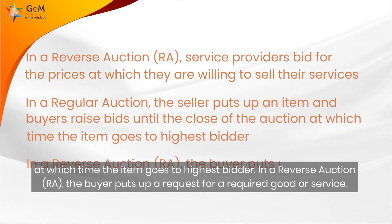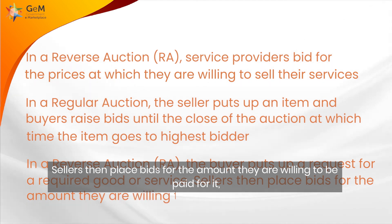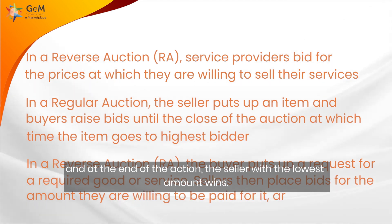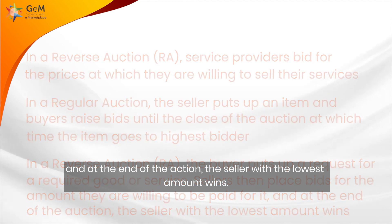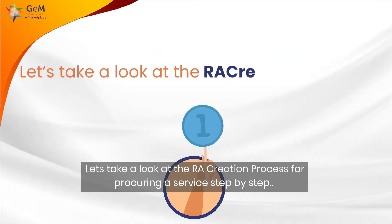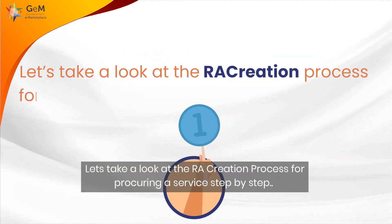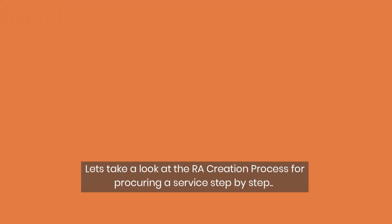In a reverse auction, the buyer puts up a request for a required good or service. Sellers then place bids for the amount they are willing to be paid for it. And at the end of the auction, the seller with the lowest amount wins. Let's take a look at the RA creation process for procuring a service, step by step.